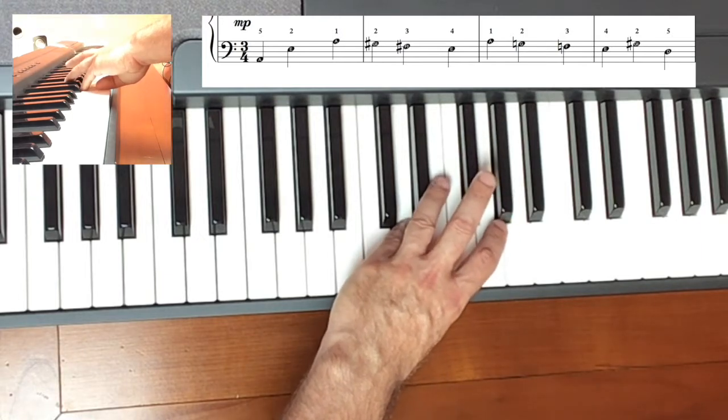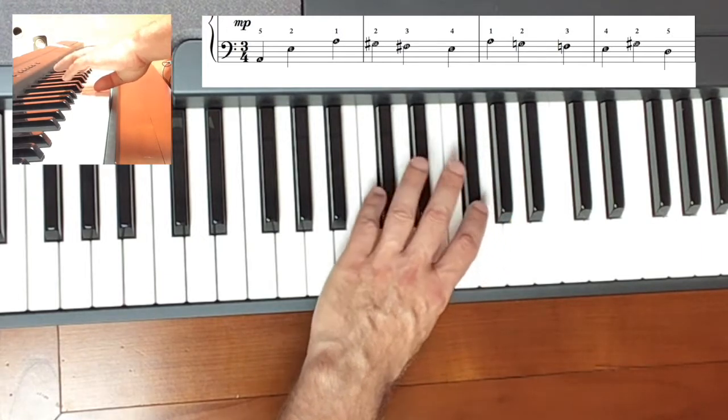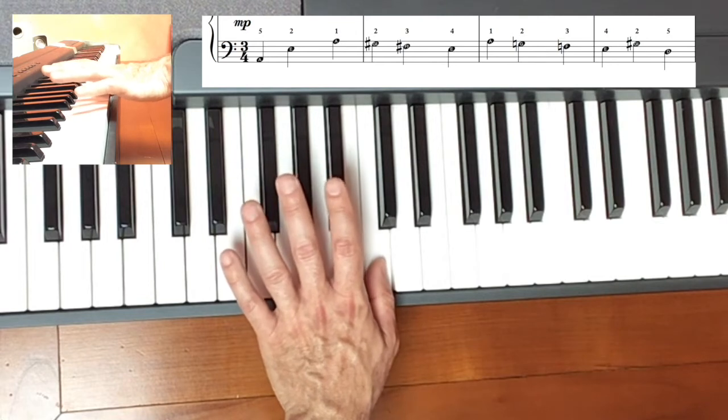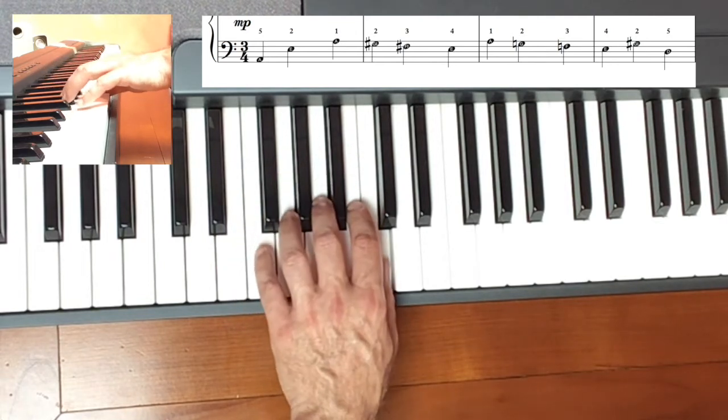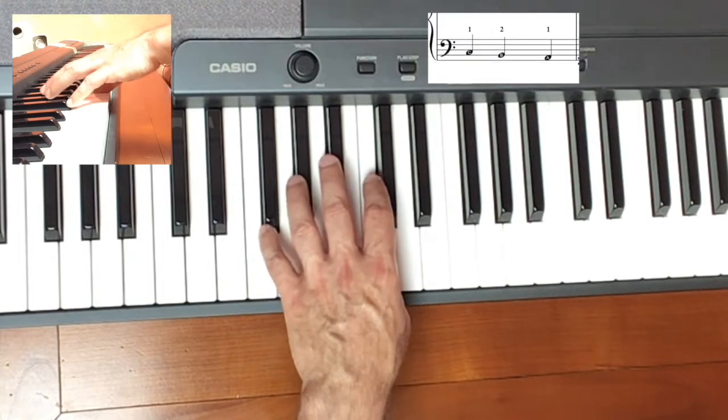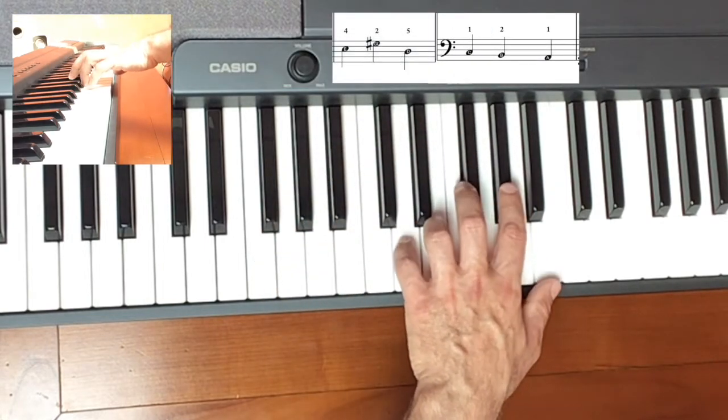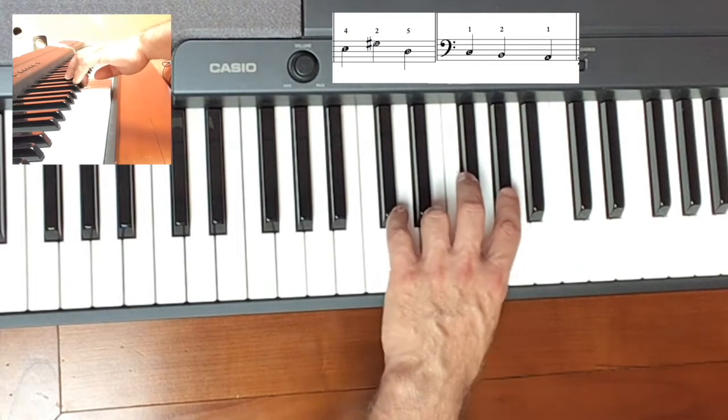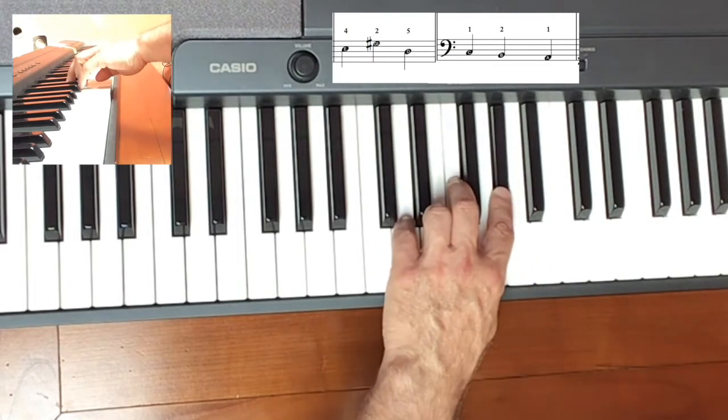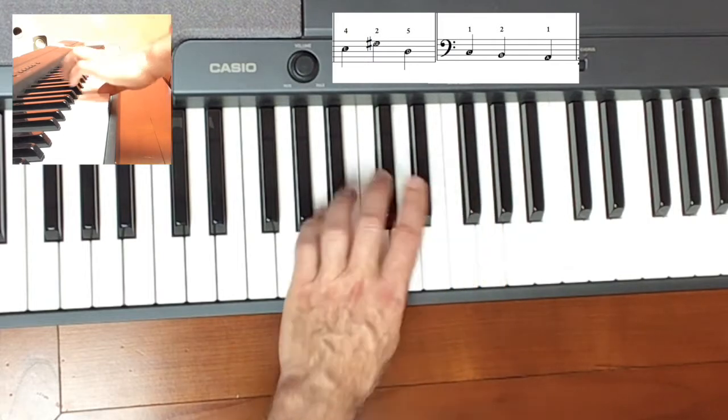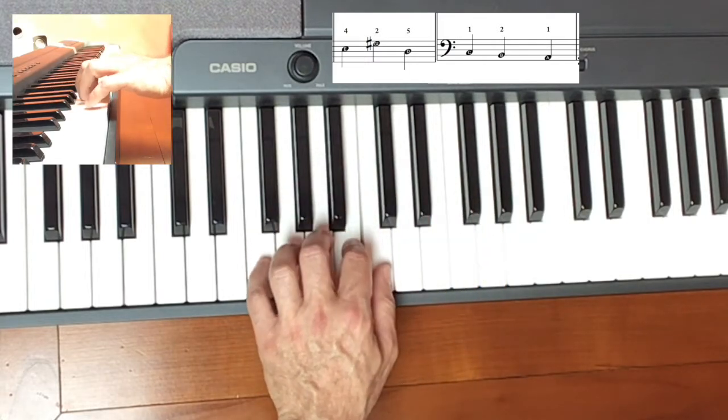Once again, this is the fourth measure when we play E, G-sharp, D. I'm starting to move under, and you're going to see that we're lining up for that C, no pun unintended, on measure five. So once again, measure four to measure five is like this, very slowly, and watch that thumb go under. E, G-sharp, D, C, B, A.